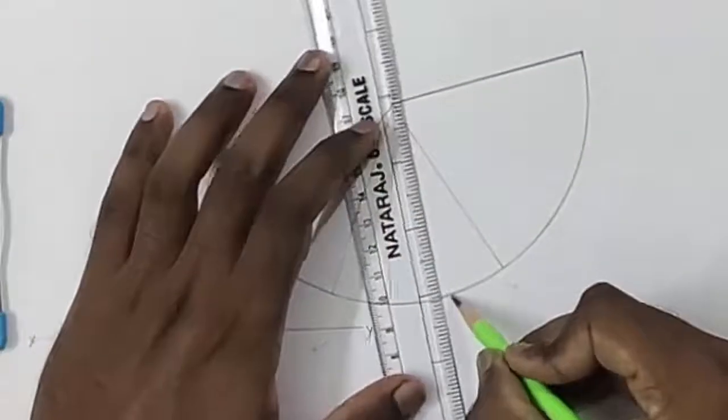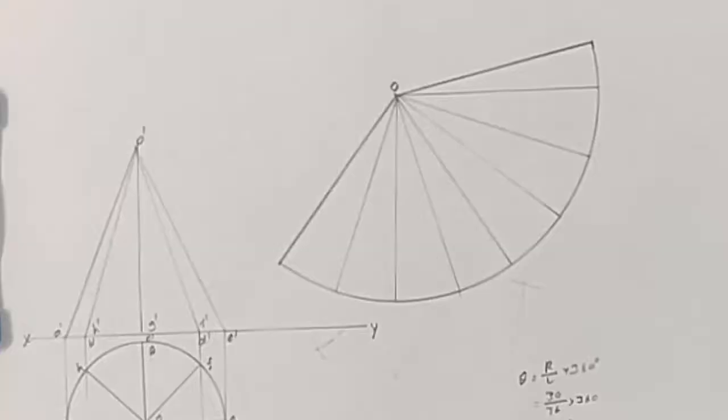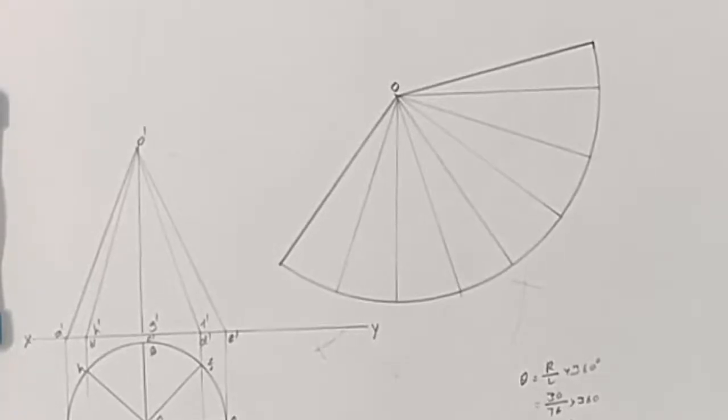Let us divide this into eight equal parts. Now locate the cutting plane as given in the question. It is given that the cutting plane is parallel to one of the generators and passing through the point on the axis at 20mm from the apex.